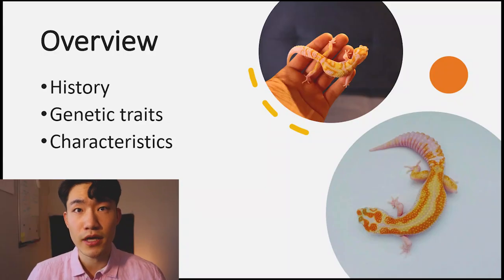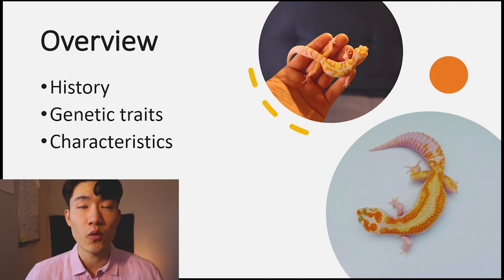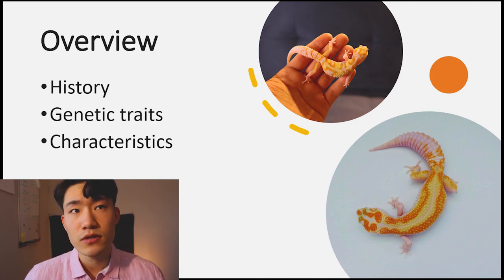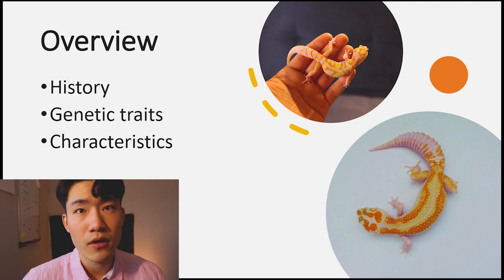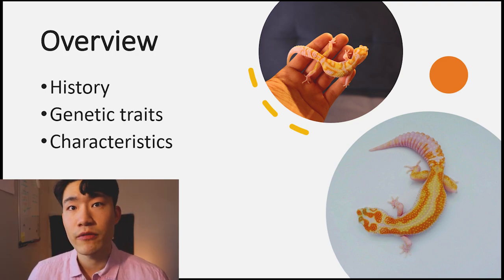Before I start my slide, there are a couple of things I want to break down so you guys can understand a little bit better. Number one is going to be the history — how they were found and where they were located. Those are the things I'm going to go over for the WY leopard gecko morph. Number two is going to be the genetic traits.